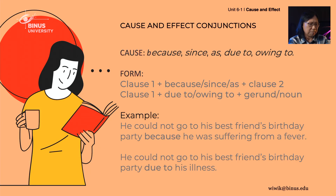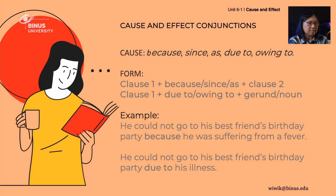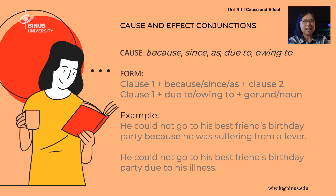If we want to focus on the cause, we can use because, since, as, due to, or owing to. The form is clause one plus the conjunction — because, since, or as — plus clause two. But if you use due to or owing to, then these conjunctions should be followed by a gerund or noun.